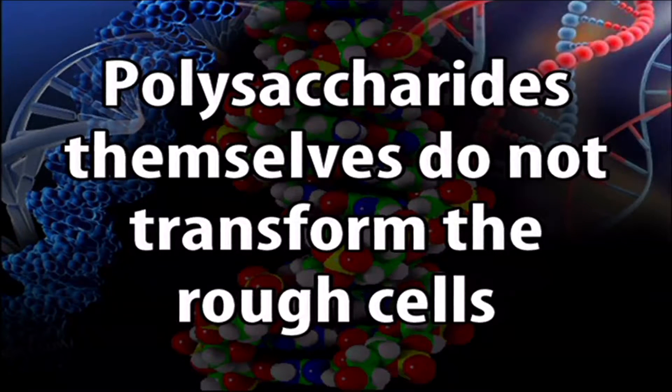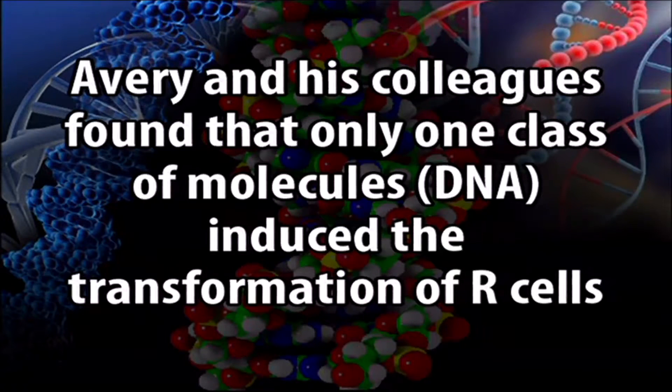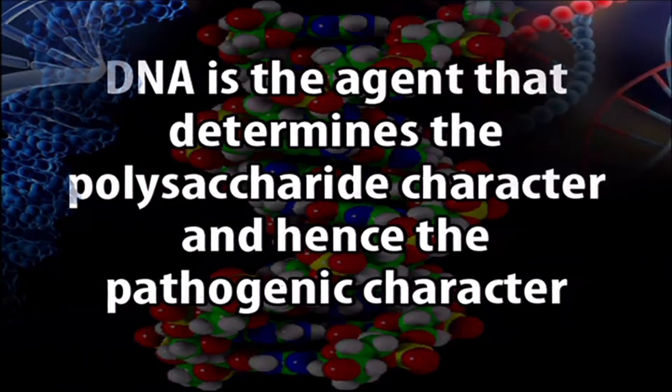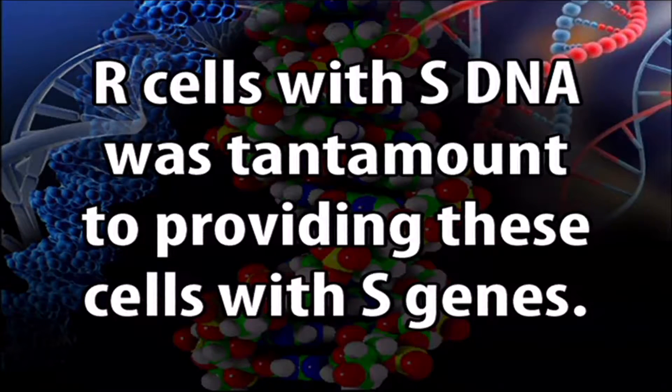These tests showed that the polysaccharides themselves do not transform the rough cells. Therefore, the polysaccharide coat, although concerned with the pathogenic reaction, is only the phenotypic expression of virulence. Avery and colleagues found that only one class of molecule — DNA — induced transformation of R cells. They deduced that DNA is the agent determining the polysaccharide character and hence the pathogenic activity of the organism. Providing R cells with S DNA was tantamount to providing these cells with the S genes. This experiment demonstrated that DNA is the transforming principle — the first demonstration that genes are composed of DNA.